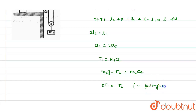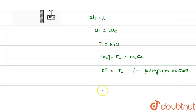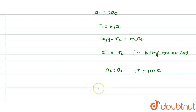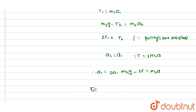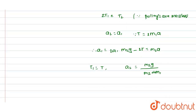Let the acceleration a2 = a, so a1 = 2a. Since T2 = 2T and the pulleys are massless, we write m2·g − 2T = m2·a. Let T1 = T. Solving these equations, we get a2 = m2·g / (m2 + 4m1).